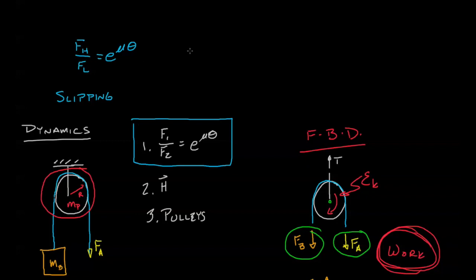This gives us the maximum relationship between force high and force low. So in other words, let's say we found out what force of A was. We know that FA over FB, is it greater than e to the mu theta? If it is, we have something that slips. If it's lower than e to the mu theta, then we know it doesn't slip. This can also be used to identify the maximum amount of action or force or mass that we can use before the rope starts to slip.